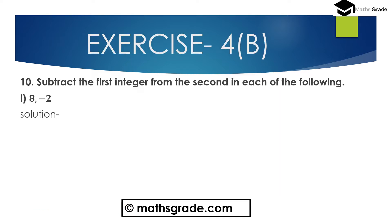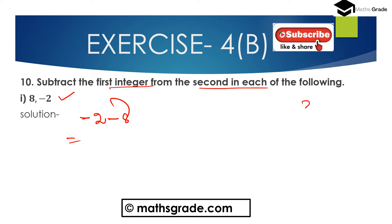Question number 10: subtract the first integer from the second in each of the following. First bit: 8 and -2. The first integer is 8 and the second integer is -2. So we subtract the first from the second: -2 minus 8. Both are negative integers, so add without sign: 2 + 8 = 10. The answer is -10. Subtracting 8 from -2 gives -2 - 8 = -10.